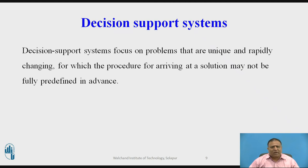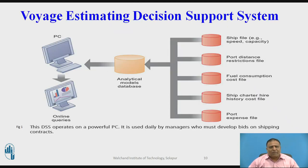What would happen to our return on investment if a factory schedule were delayed for six months? This is the diagram of a wage estimating decision support system, where the DSS operates on a powerful PC and is used daily by managers who must develop bids on shipping contracts. The ship file, port distance, fuel consumption and mean cost file, ship charter hire history cost file, and port expenses file provide data to the analytical models database, where analysis is made and output is shown on the PC. Online queries also interact with this system.